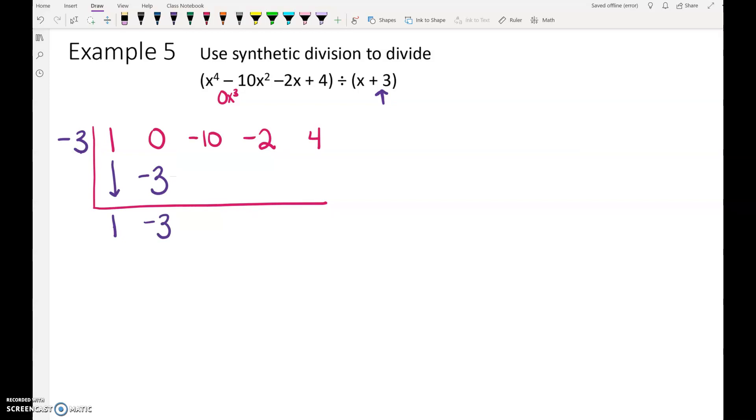You don't need to draw in the arrows if you don't want to, but if you like the arrows to kind of direct your eyes, you can put the arrows in. Negative 3 times negative 3 is 9, add. Negative 3 times negative 1 is positive 3, add.